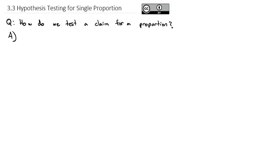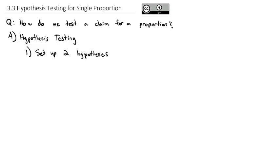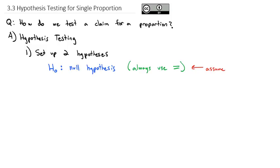The way we test claims in statistics is called hypothesis testing. The idea behind hypothesis testing is it's a clear process we can do to test if a claim is true. What we'll do is we'll first set up two hypotheses, and they're going to be contradictory hypotheses — either the first one or the second one is true. The first one we'll call H sub 0, which is called the null hypothesis. It will always use equals — some variable equals something. We will always assume the null hypothesis is true until proven otherwise.